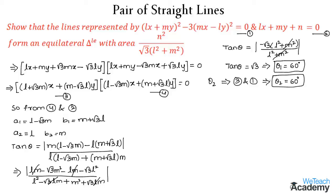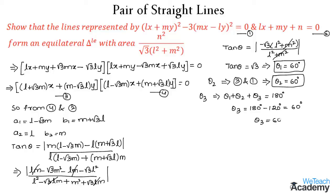Since θ₁ and θ₂ are known, we find θ₃ using the fact that the sum of all angles in a triangle equals 180°. So θ₃ = 180° − (θ₁ + θ₂) = 180° − 120° = 60°. Since all three angles equal 60°, we can confirm that these lines form an equilateral triangle.